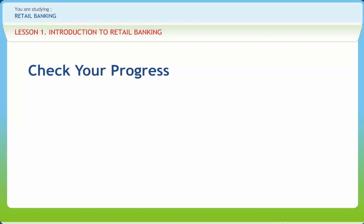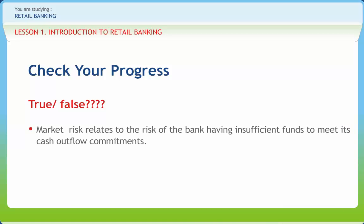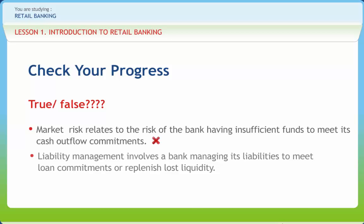Now let us check if you have understood the concepts discussed in this lesson. Statement: Market risk relates to the risk of the bank having insufficient funds to meet its cash outflow commitments. Right or wrong? Wrong. Statement: Liability management involves a bank managing its liabilities to meet loan commitments or replenish lost liquidity. Right or wrong? Right.